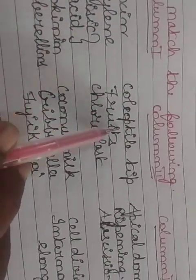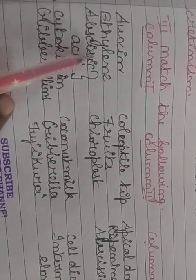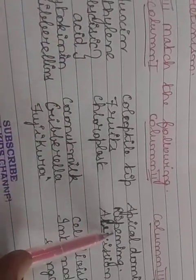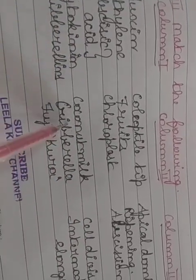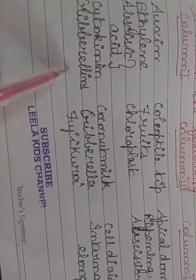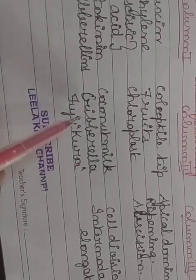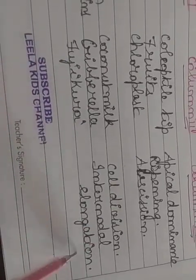Match the following — Column 1, Column 2, and Column 3. Auxin — coleoptile — apical dominance. Ethylene — fruits — ripening. Abscisic acid — chloroplast — abscission. Cytokinin — coconut milk — cell division. Gibberellins — Gibberella — Bakanae disease (Foolish seedling / fujikuroi) — internodal elongation.